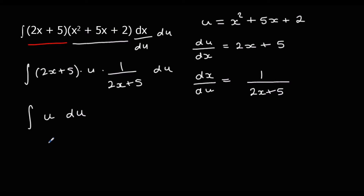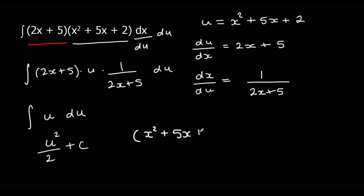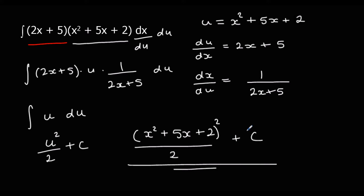So we can integrate it now: add 1 to the power, divide by the new power, and plus c. There's our answer — all we need to do is substitute back in our u, which is x squared plus 5x plus 2. So we've got that squared over 2 plus c, and there's our answer.